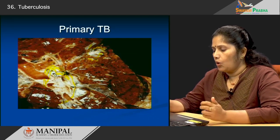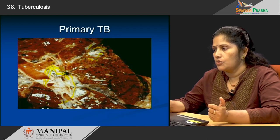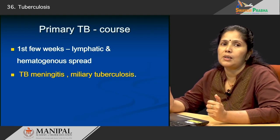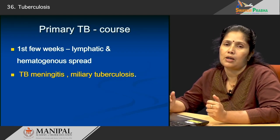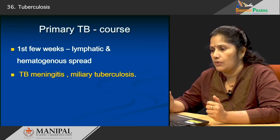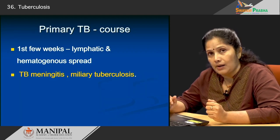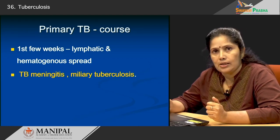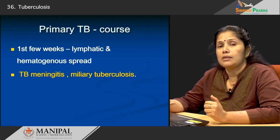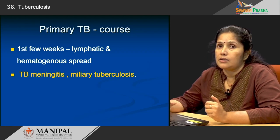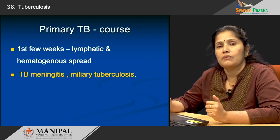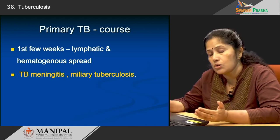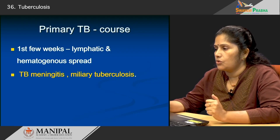What happens to these patients once they have developed primary tuberculosis? In the first few weeks, via the lymphatics and blood vessels, the bacilli can spread to different parts of the body — known as lymphatic and hematogenous spread. It usually spreads to the meninges, causing tuberculous meningitis, or it can go to multiple other organs, which is known as miliary tuberculosis, occurring as a complication of primary tuberculosis.